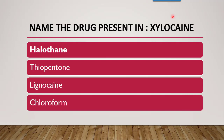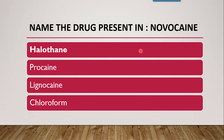Next question: name the drug present in the brand Xylocaine. The brand Xylocaine contains the drug lignocaine. Other options — halothane, thiopentone, chloroform — are incorrect. Next question: name the drug in the brand Novocaine. Options are halothane, procaine, lignocaine, and chloroform. The correct answer is procaine.